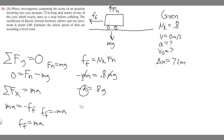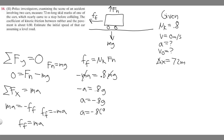Multiplying both sides by negative 1 to isolate acceleration, we get a equals negative 0.8 times g. Since g is 9.8 m/s², acceleration equals negative 0.8 times 9.8, which is negative 7.84 meters per second squared. So the acceleration is minus 7.84 m/s².